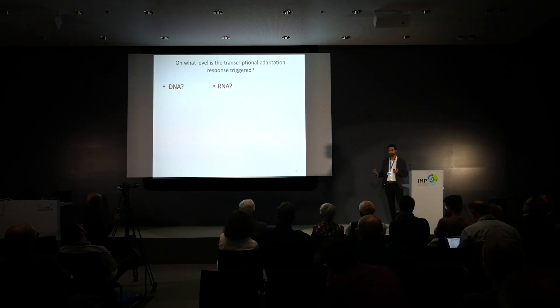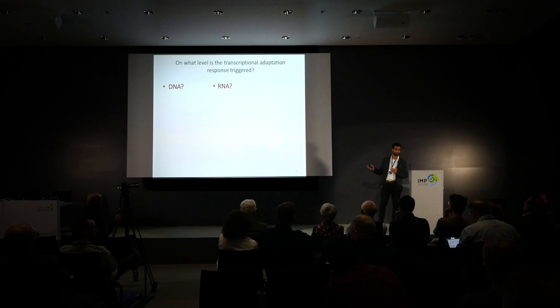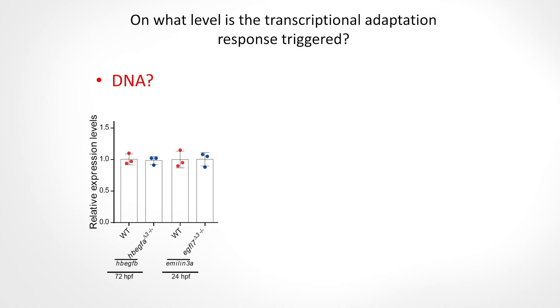This brought us to think about two other levels of regulation. Could it be the DNA lesion itself that triggers some kind of epigenetic changes, leading to upregulation of those genes? Or is it a consequence of the presence of mutant mRNA molecules? To test the DNA hypothesis, we reasoned that if it's just the DNA lesion, then any kind of mutation — even those that don't affect RNA or protein integrity, like in-frame mutations — should also trigger this adaptation response. However, this was not the case: in-frame HBGF-A delta-3 alleles do not upregulate the paralog HBGF-B, and EGFL7 delta-3 alleles do not upregulate EMLIN genes.